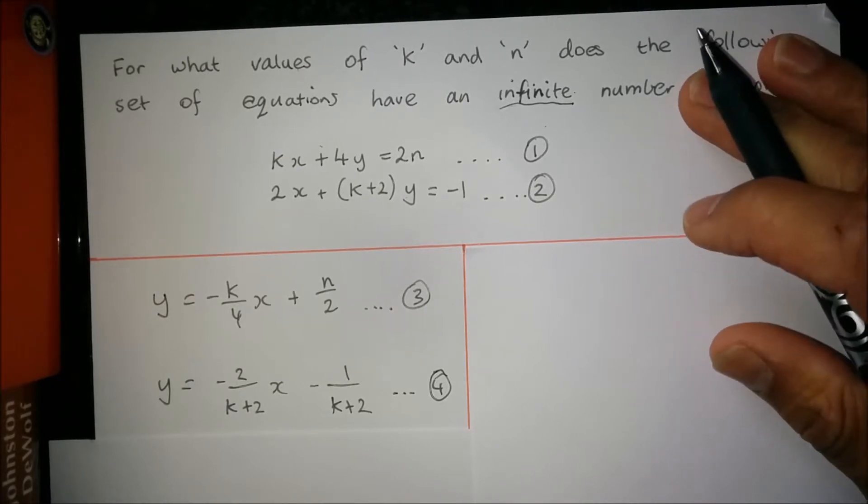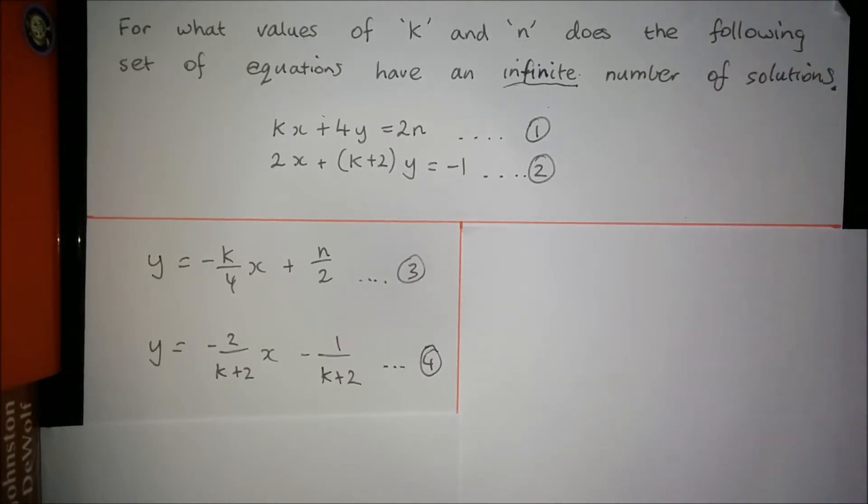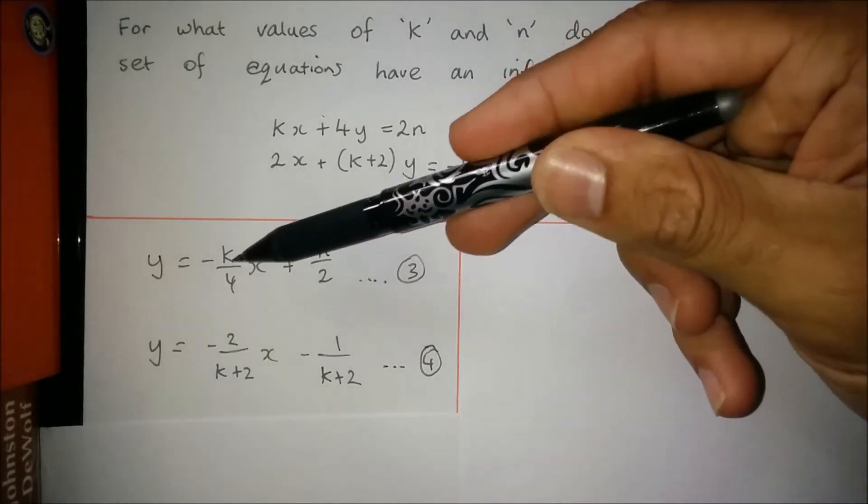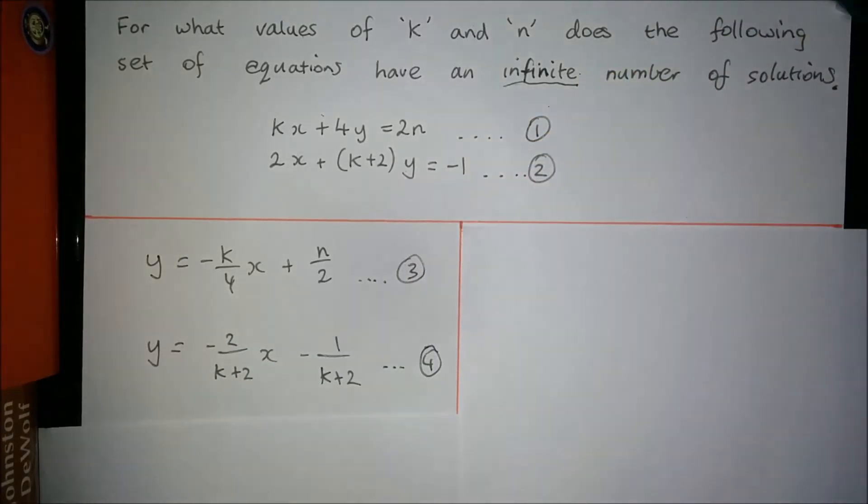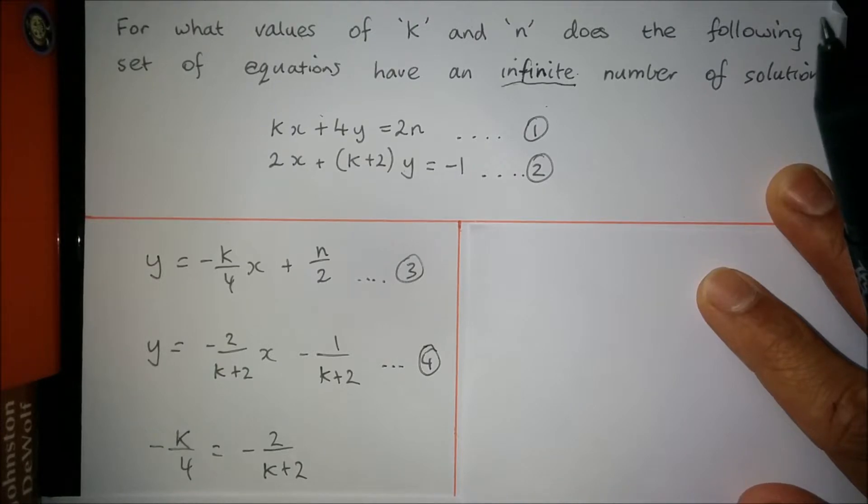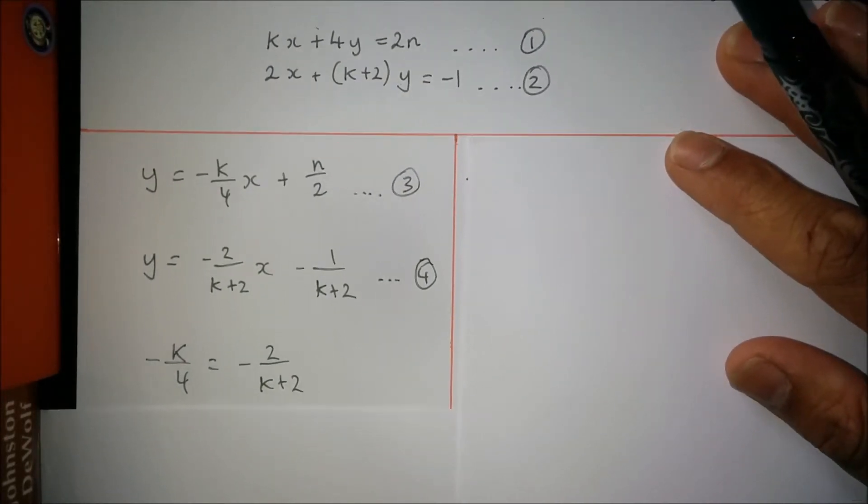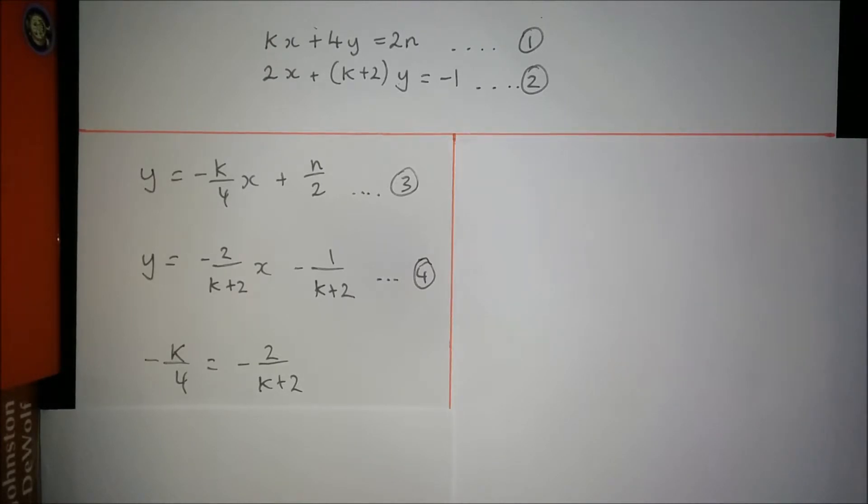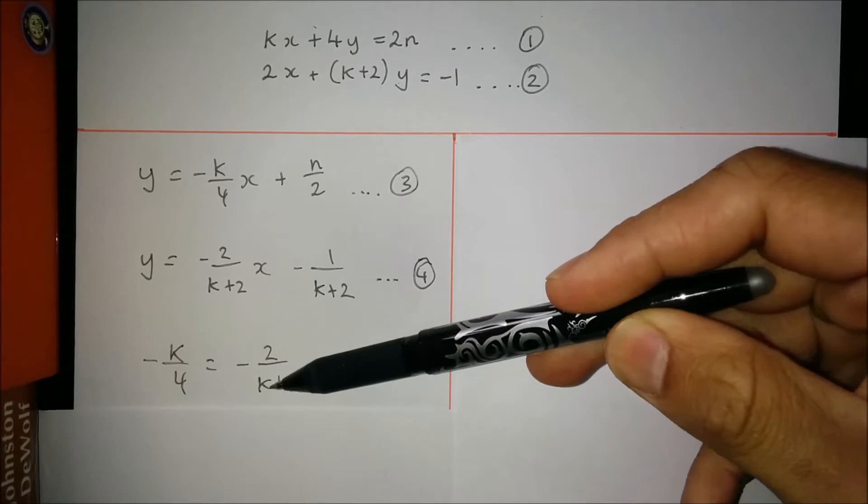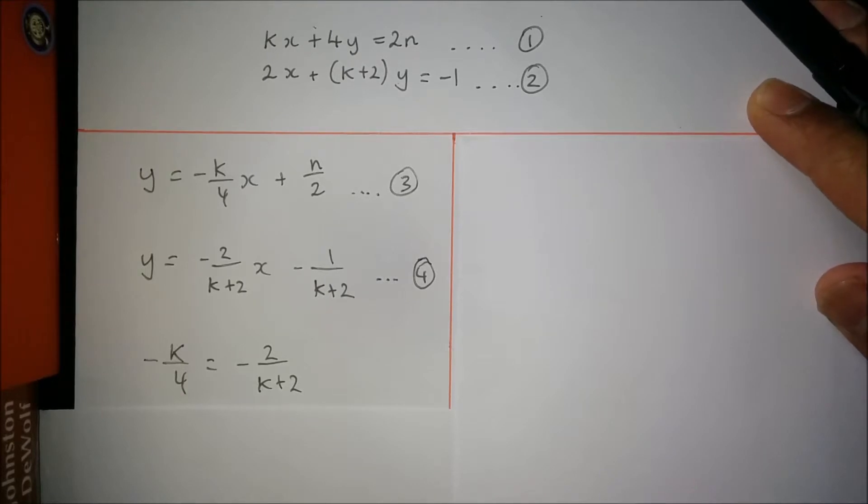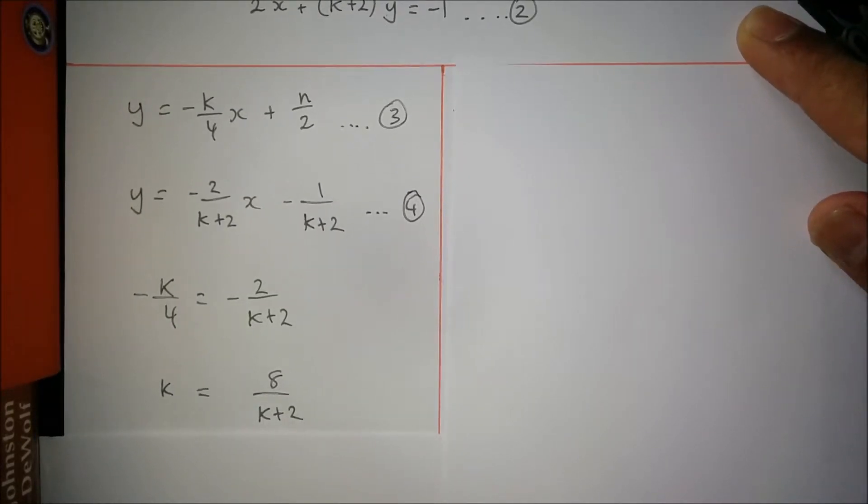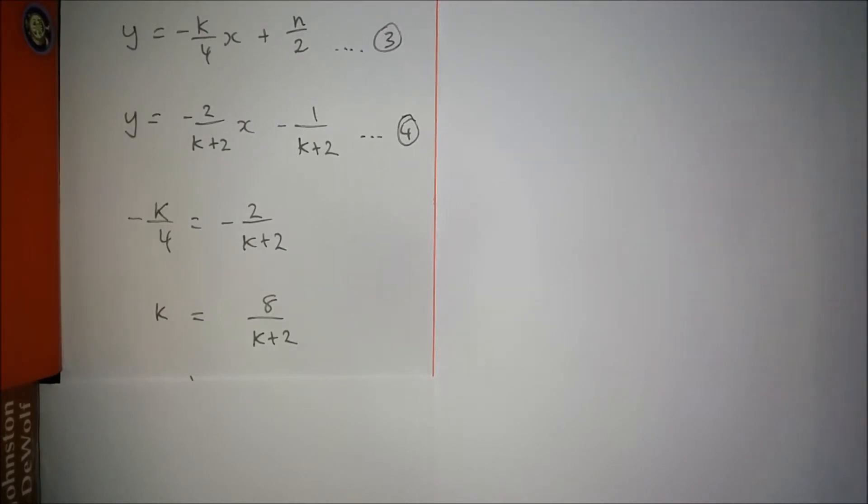Alright, so from this step, we can say that for the situation where you have an infinite number of solutions to arise, that the values of m must be the same. So we're going to let our values for m be the same. So m1 is going to be negative k over 4, and m2 is going to be negative 2 over k plus 2. So we can write that equation down, and from here, once you write that down, it's fairly easy to see that this equation is solvable, because you've got one equation and only one unknown, which is k. If you rearrange that equation to try to make k the subject, you can multiply both sides by 4, and you would get k equals 8 over k plus 2.